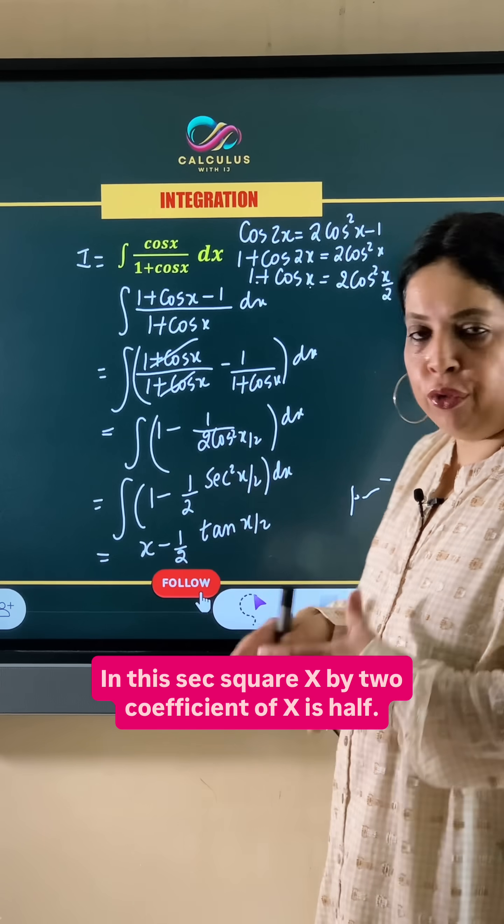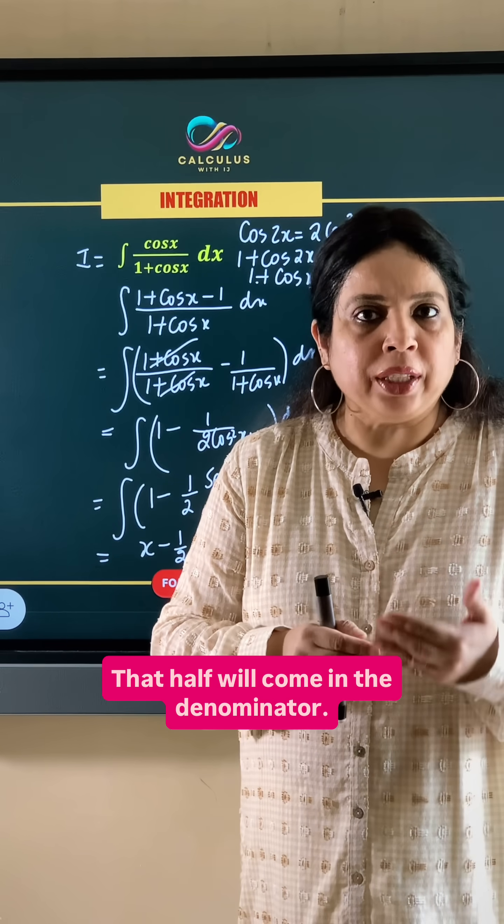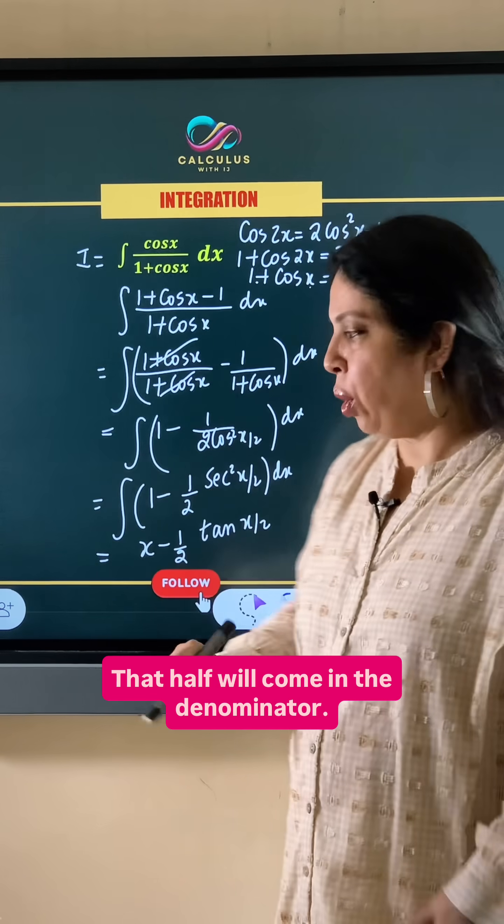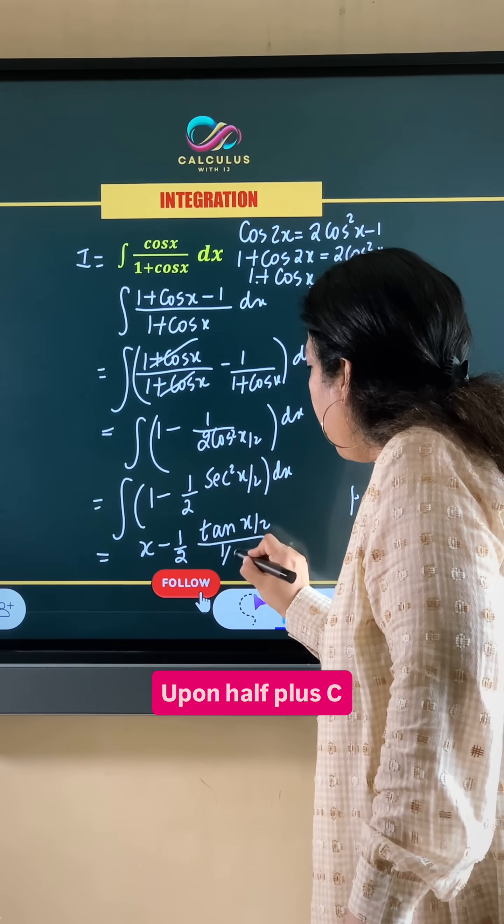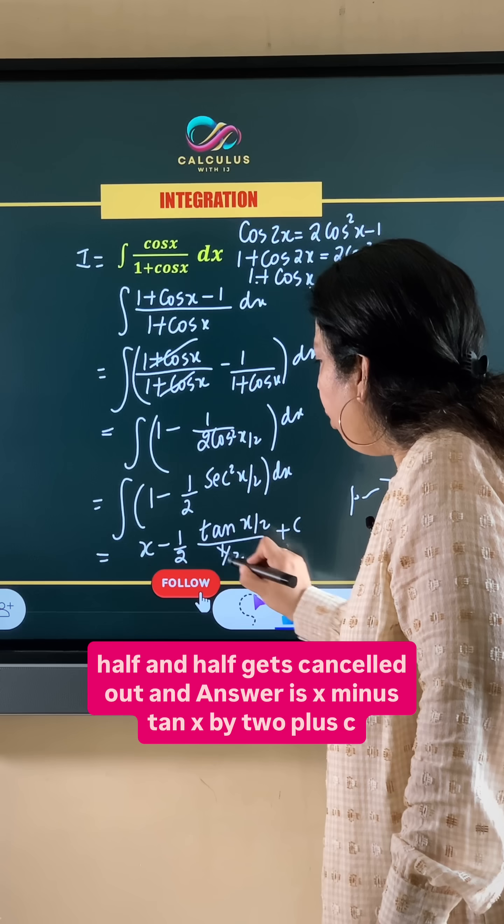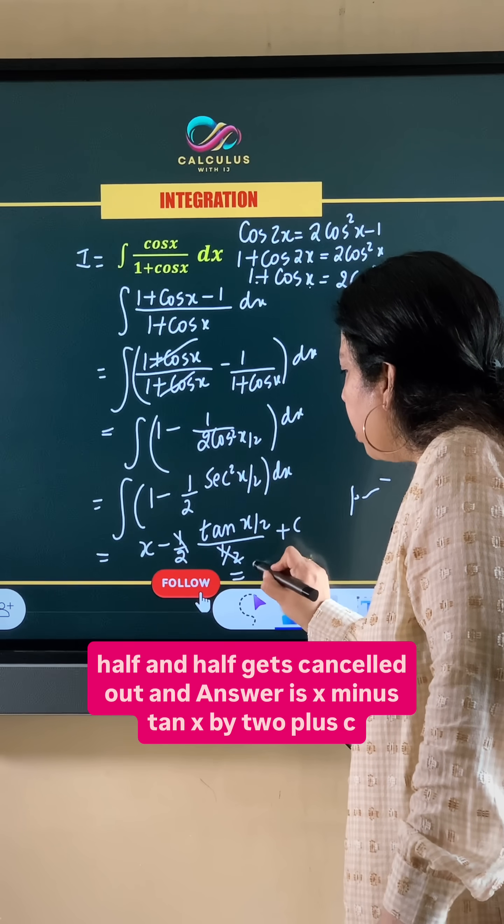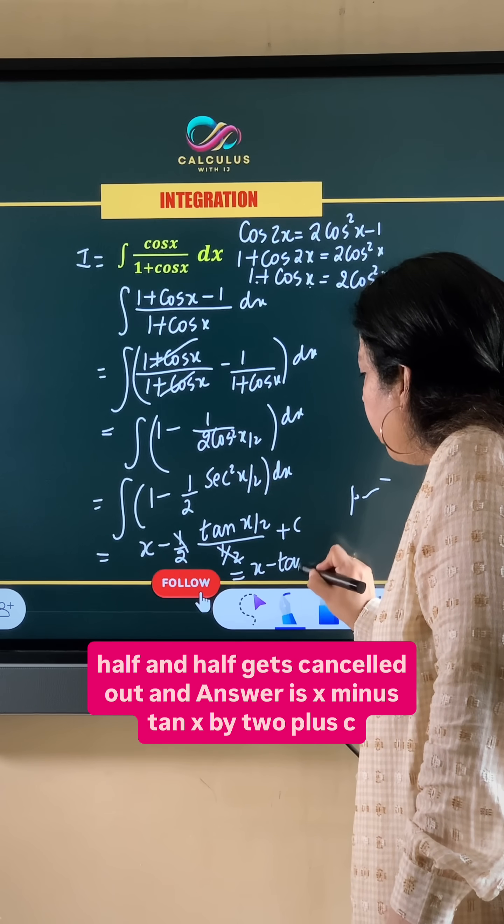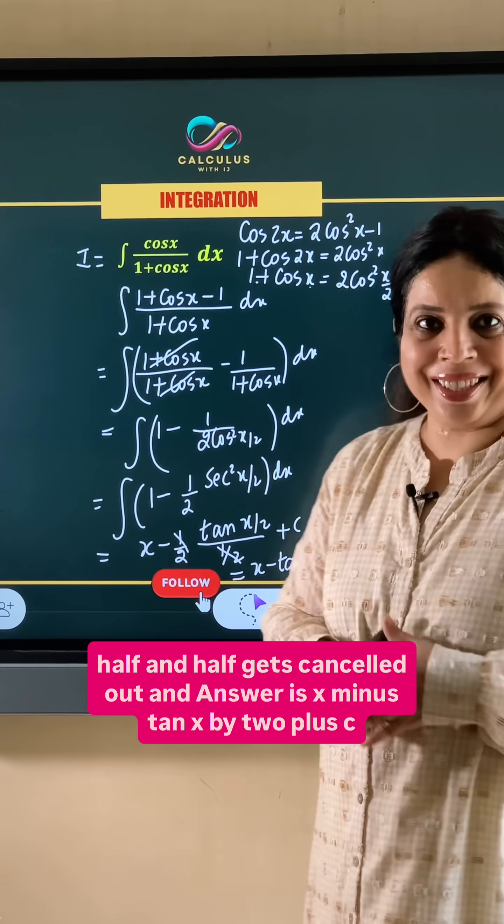This sec square x by 2 coefficient of x is half. So that half will come in the denominator. So upon half plus c, half and half gets cancelled out and the answer is x minus tan x by 2 plus c.